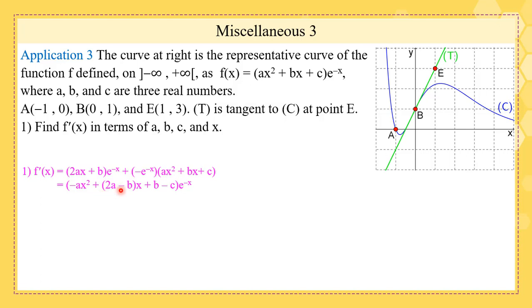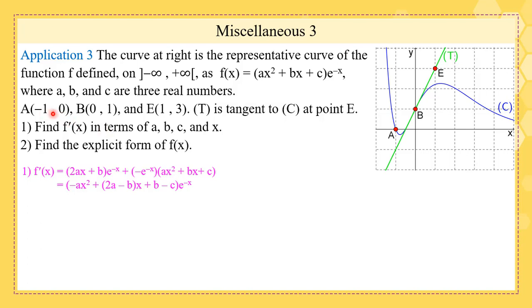After differentiating and factoring out e⁻ˣ as a common factor, we rearrange with x² terms, x terms, and constants separately to get f'(x) in terms of a, b, c, and x.